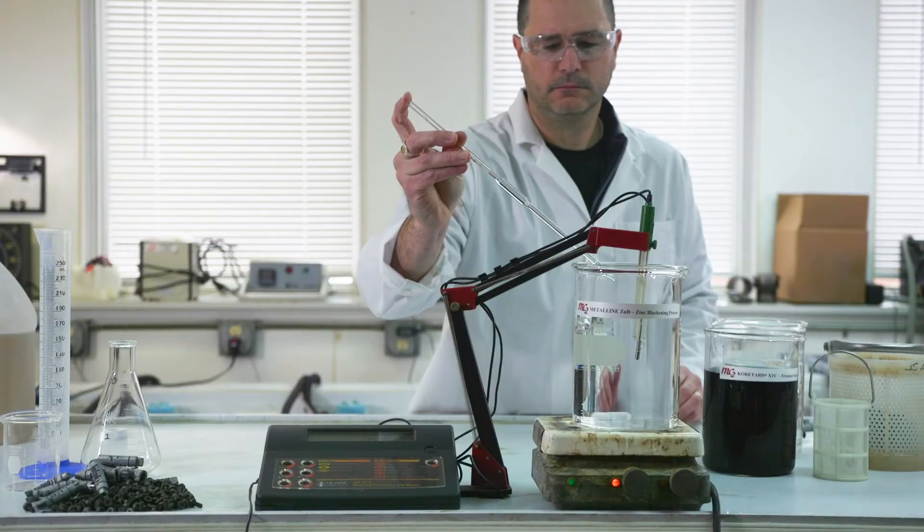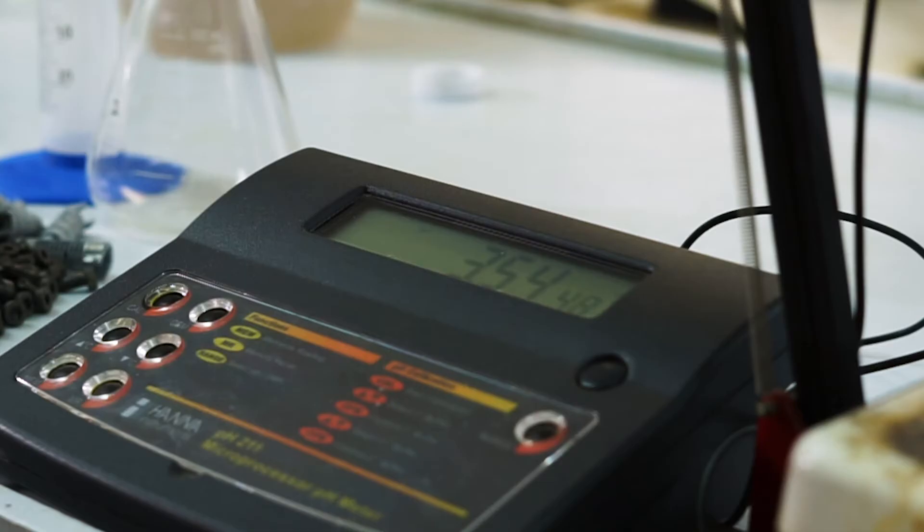MetaLine ZMB is made up at 20% by volume and the pH is adjusted down with dilute sulfuric acid to 3.5. Frequent acid additions are necessary to maintain the pH during the life of the solution.